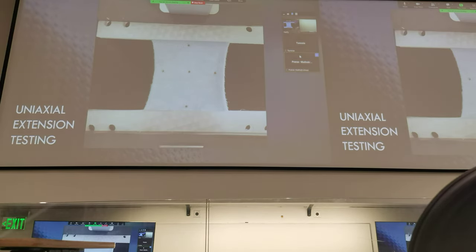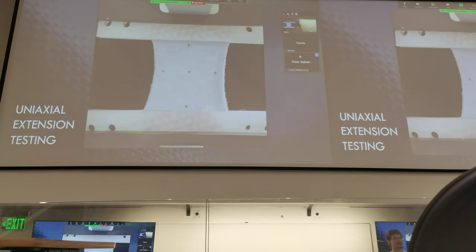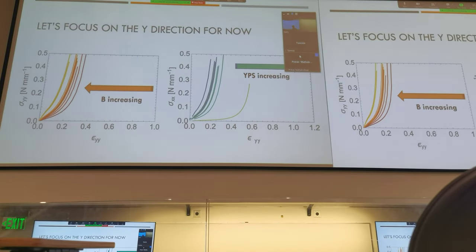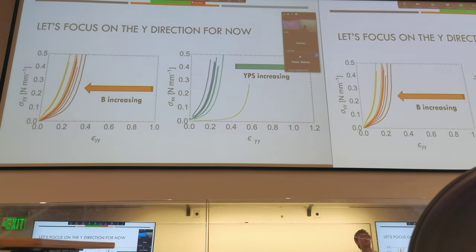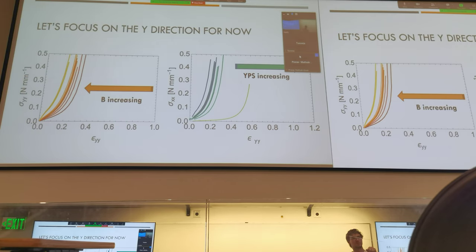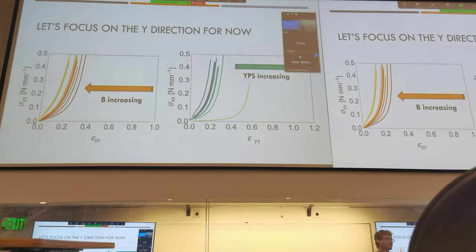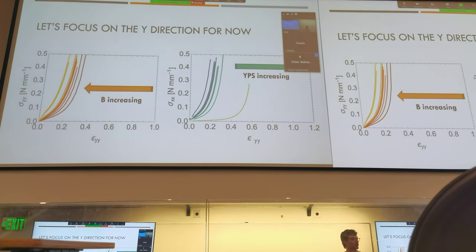Speaking of extension testing — it's very exciting. You can't see it, but that machine is actually moving right now, just moving quasi-statically, so it makes for a really riveting experience. Our results typically look something like this — this is what our simulation says we should expect. Right now we're only looking at the y-direction, a vertical stretch of a long column. The simulation states that two variables should dominate in that direction: the bending modulus and the yarn-per-stitch. As your bending modulus increases, you should move left along the curve, and as your yarn-per-stitch increases, you should move right along the curve.